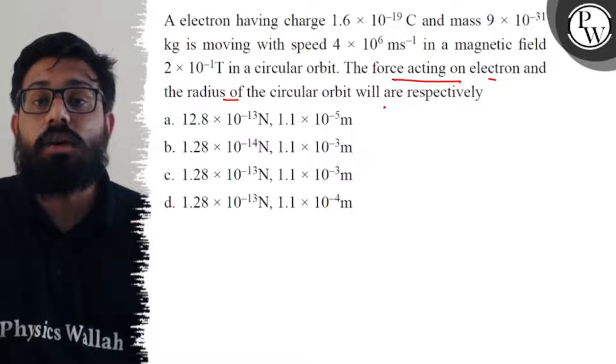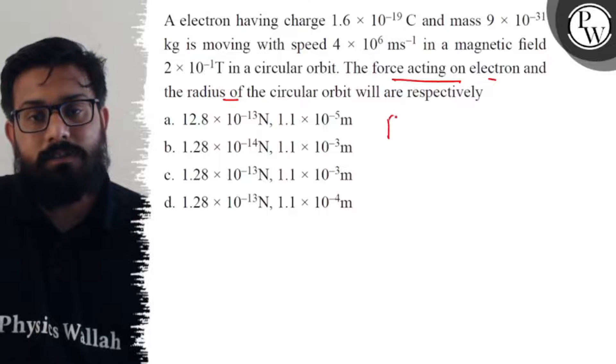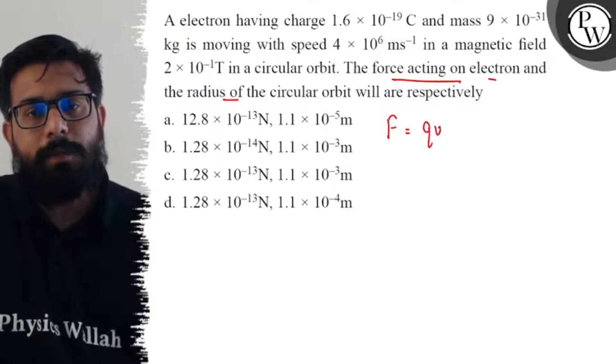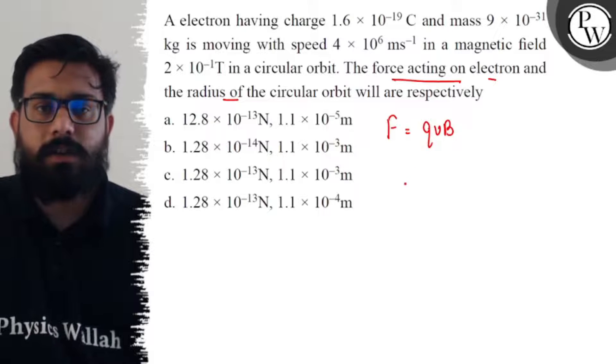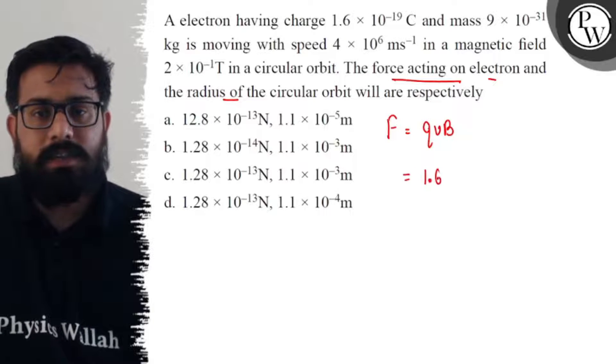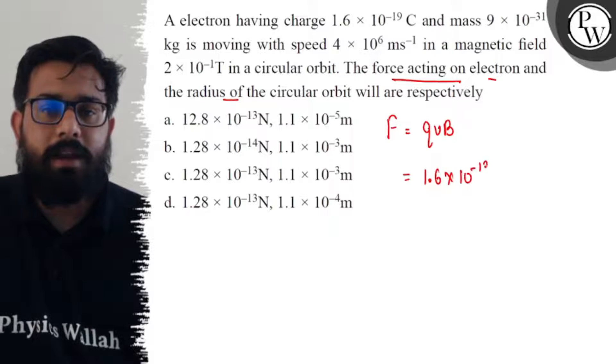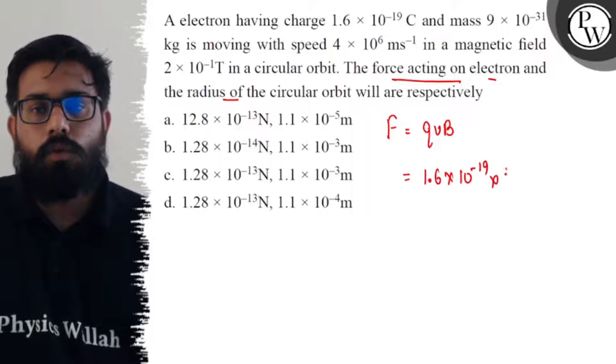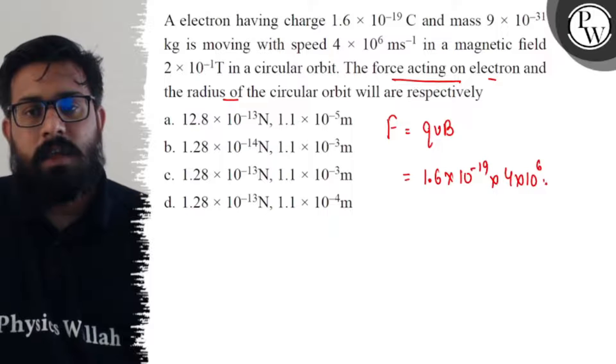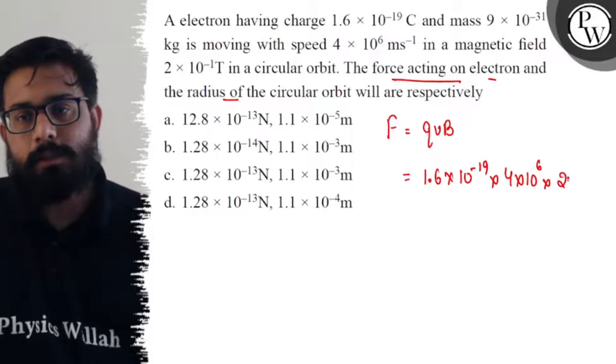So first of all, if we talk about the force acting on a charged particle, the magnetic force can be written as F = qvB where q is the charge of the electron, charge is 1.6 × 10^-19, velocity is 4 × 10^6, and the magnetic field 2 × 10^-1.